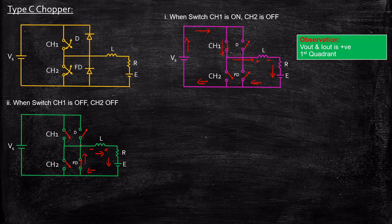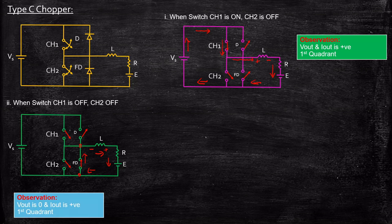Vout will be equal to 0 because Vout is measured at these two points which are short circuited. Iout is still positive because the current is still flowing toward the load. As a result, the circuit is still operating in the first quadrant with Vout equal to 0 and Iout positive.